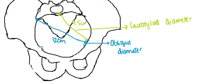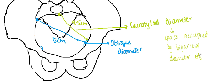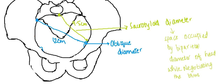The length of the sacrotyloid diameter is 9.5 centimeters. This sacrotyloid diameter represents the space occupied by the biparietal diameter of the fetal head while negotiating the brim. These are the different diameters of the pelvic inlet.